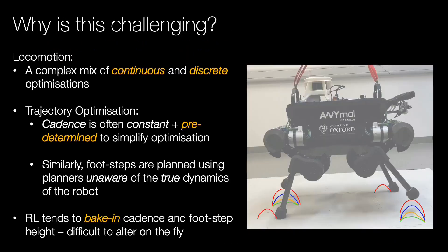Why is this challenging? Locomotion is a mixture of continuous and discrete optimizations which are non-convex and non-linear. However, direct optimization often uses predetermined and constant contact schedules to simplify the optimization. Reinforcement learning instead bakes in gait parameters, and these are difficult to alter once trained.